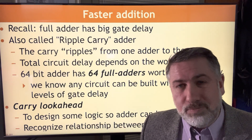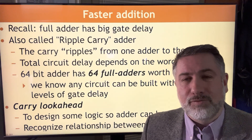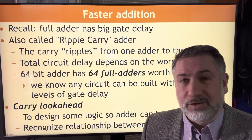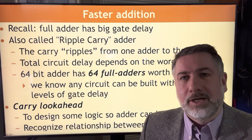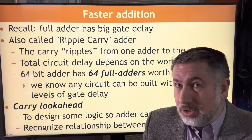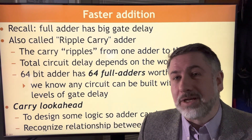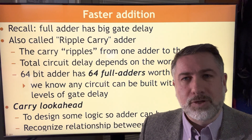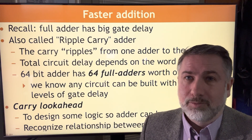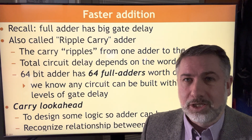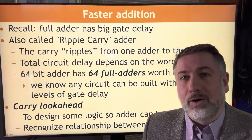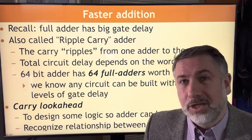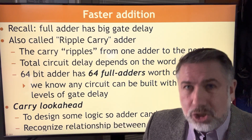We measure the speed of high-performance computing based on floating point operations per second — flops. Those are usually floating point additions. So if you can increase the speed of your floating point additions, you can increase the performance of your entire machine.